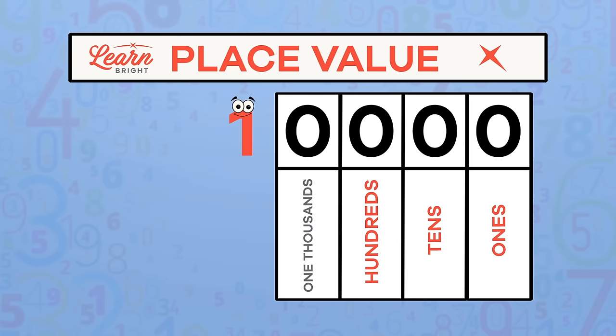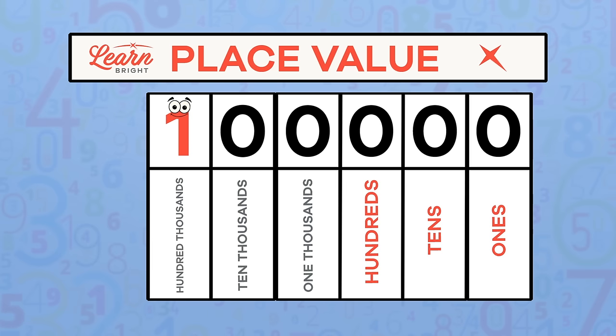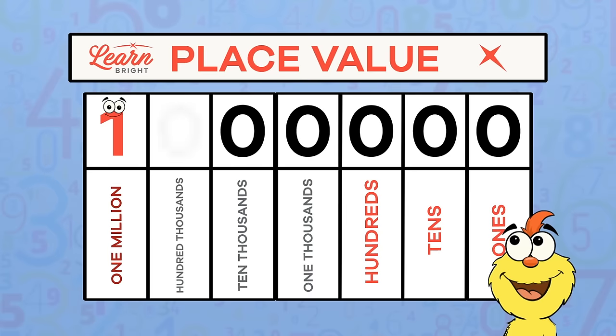So what do you think the name of the next added place value column is? Did you say ten thousands? If so, you're exactly right! How about the next one? It's hundred thousands.